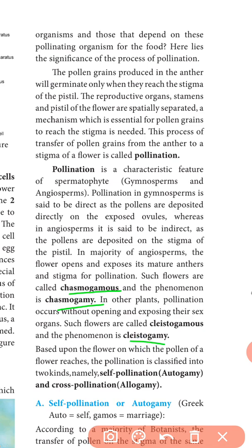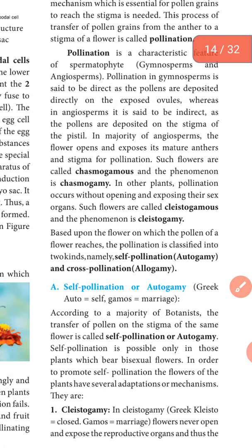There are two kinds of pollination: one is autogamy and another is allogamy. 'Auto' means self and 'allo' means close to each other in Greek. Self-pollination is also known as autogamy — the transfer of pollen to reach the stigma of the same flower. This is self-pollination. It is only possible for bisexual flowers. Cross-pollination means the transfer of pollen to reach the stigma of another flower.